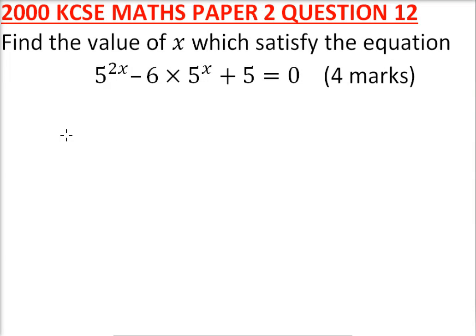In 2000, we are told, paper 2, question 12, find the value of x which satisfies the equation 5 to power 2x minus 6 times 5 to power x, then we have plus 5 is equals to 0.